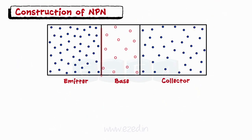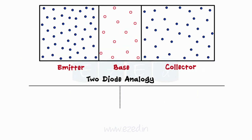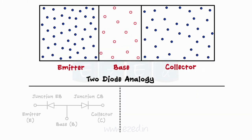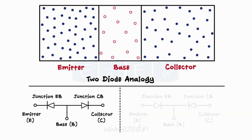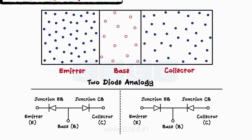As we get two PN junctions in BJT — the base-to-emitter junction and the collector-to-base junction — we consider the two-diode analogy for transistors.